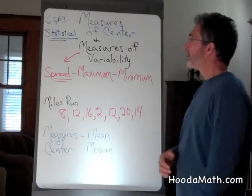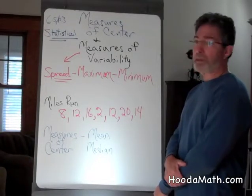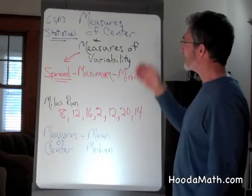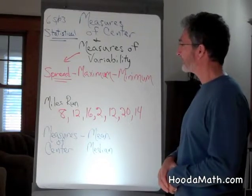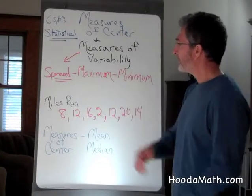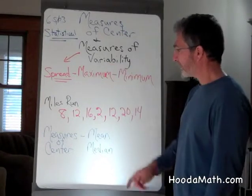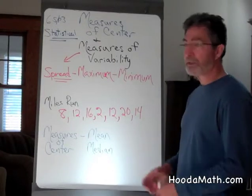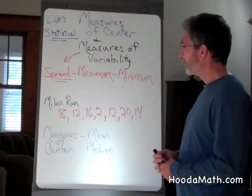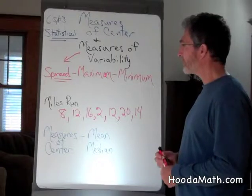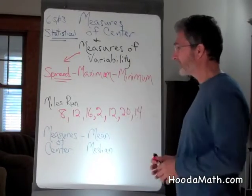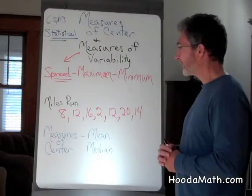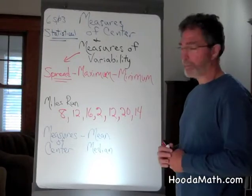In this lesson, we're going to be contrasting measures of center and measures of variability. Spread is a measure of variability, and the two measures of center are either the mean or the median. When we look at the spread, we're going to be talking about the maximum distance a particular runner named Linda was running to train for a marathon.